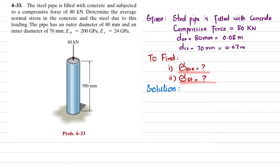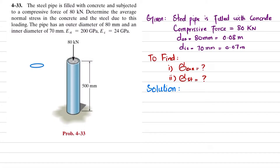We need to find the stress in the concrete and the stress in the steel. This load is acted upon by the pipe having concrete, so some of the load will be taken by the concrete while some will be taken by the steel pipe. Drawing the cross-sectional view, the 80 kilonewton load — some is taken by Pc (concrete) and some by Ps (steel pipe). We use equilibrium to solve.